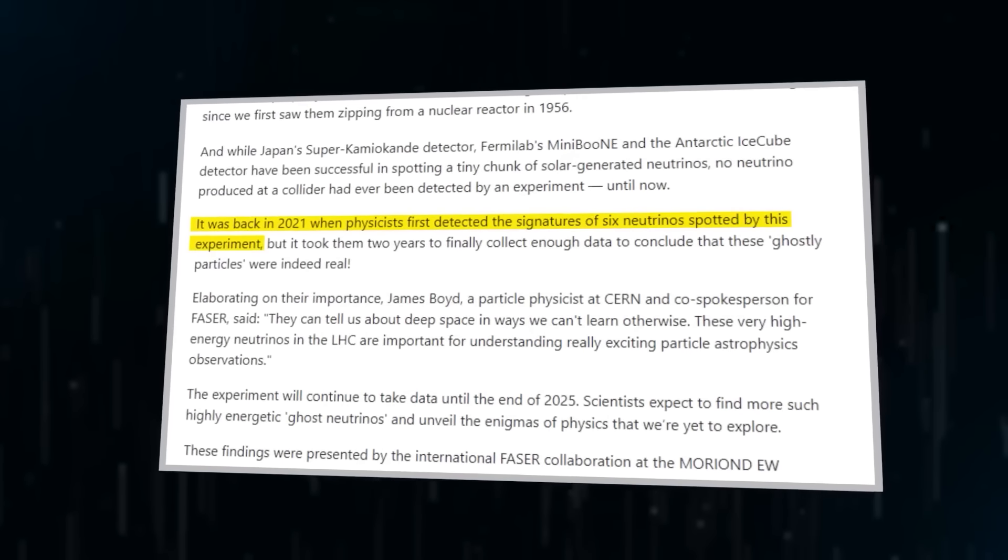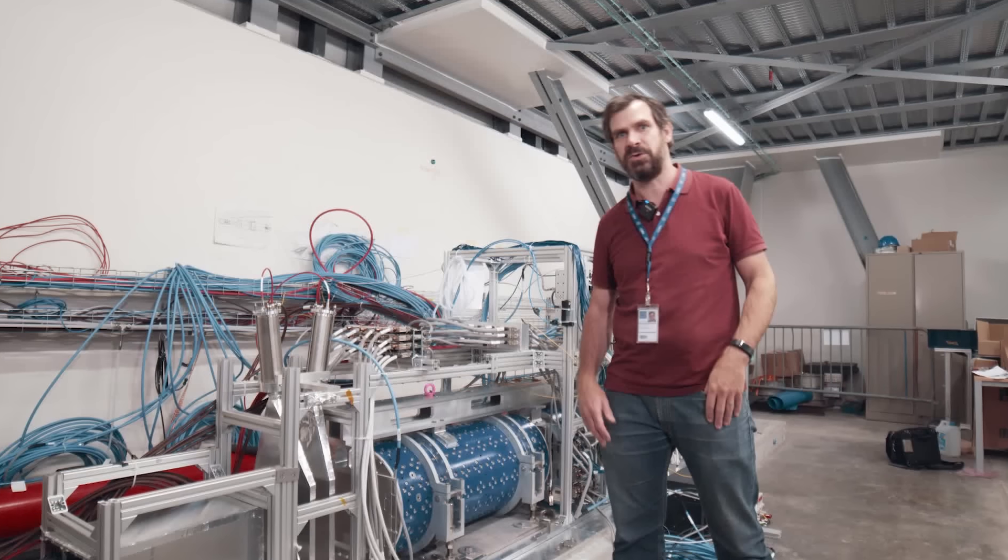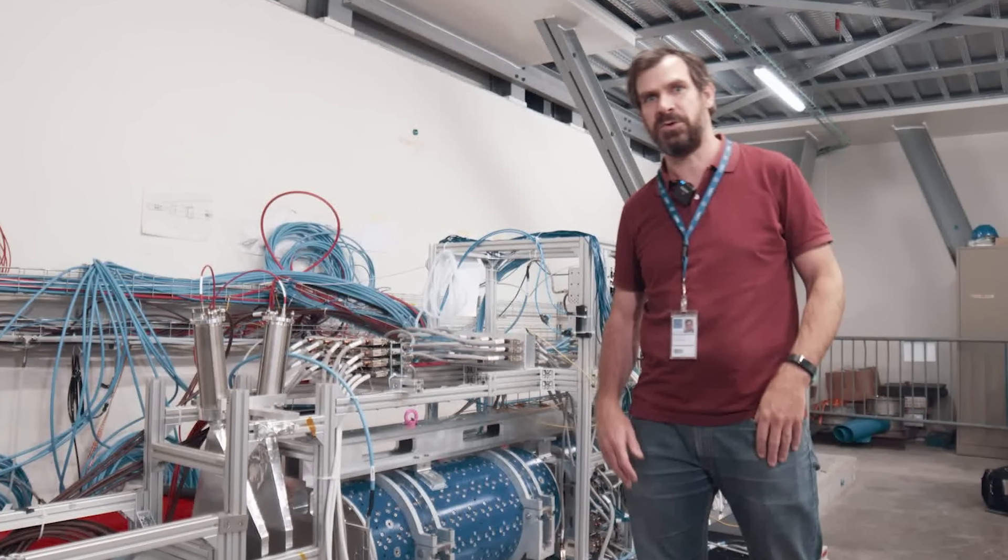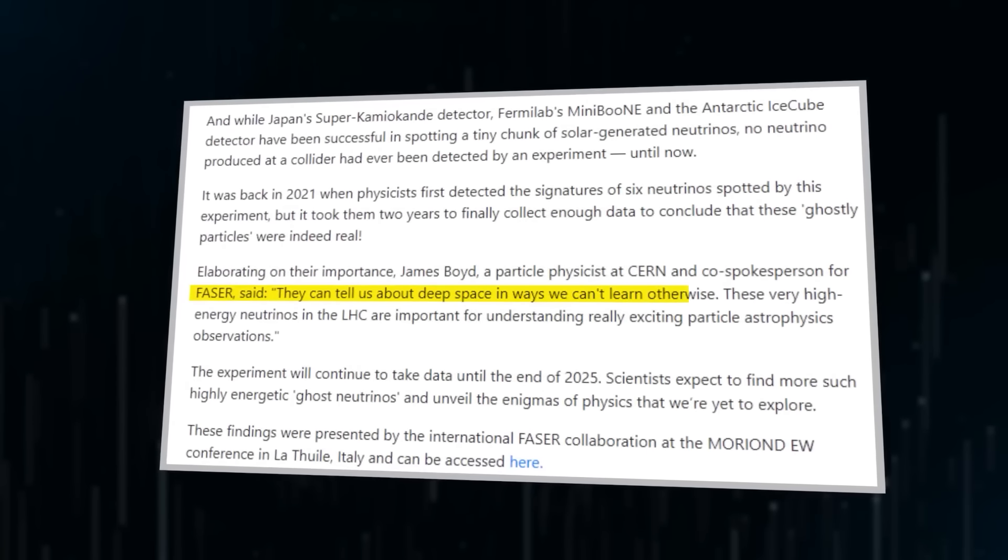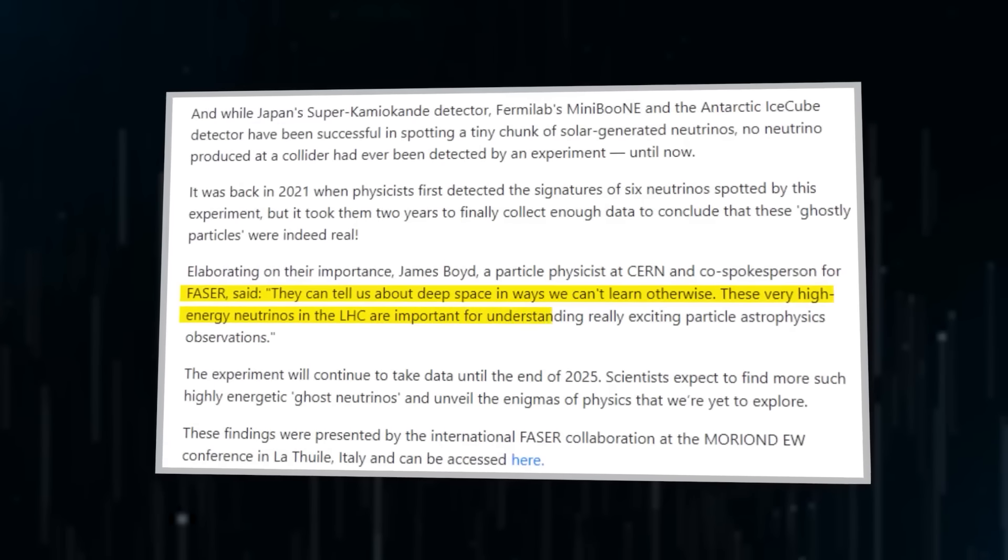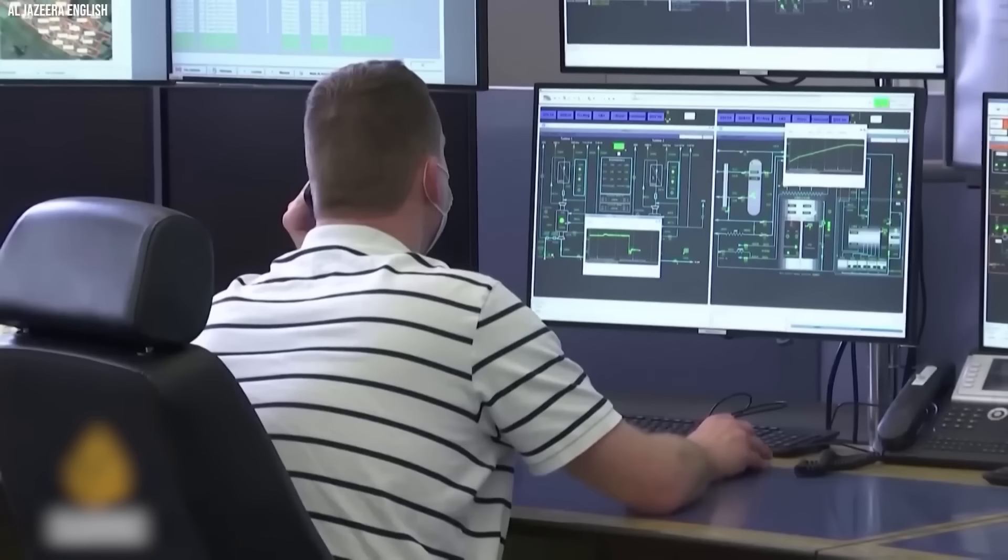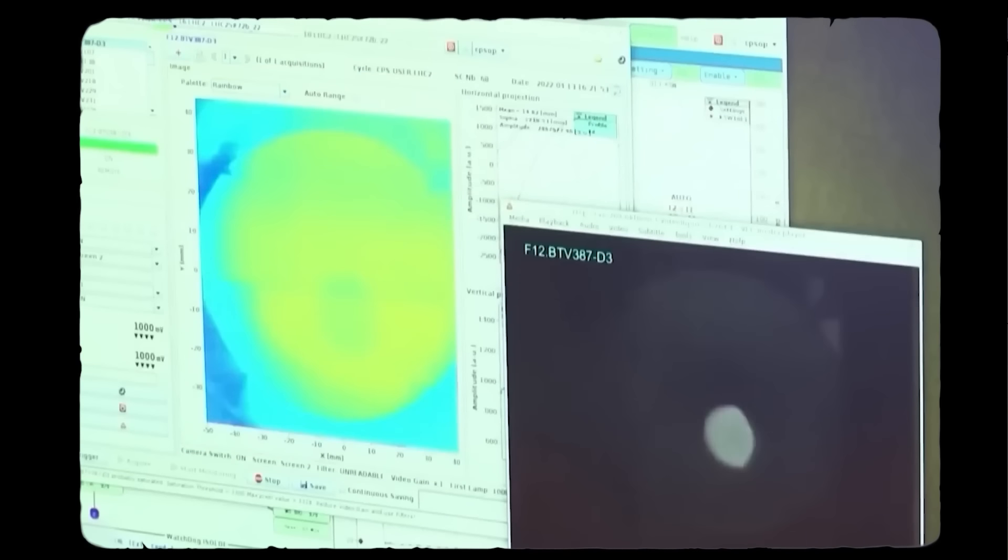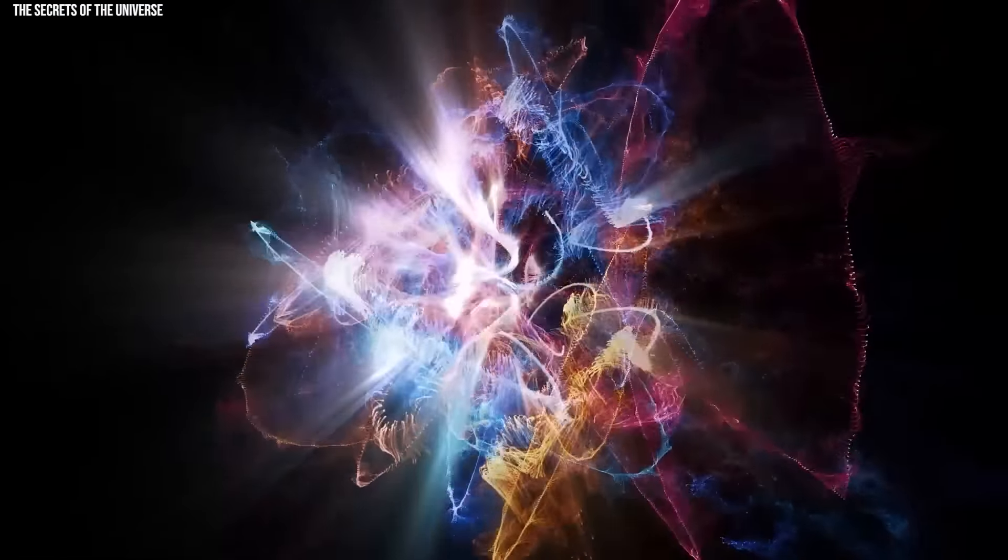Physicists detected the signatures of six neutrinos in 2021, yet it took two years to gather sufficient data to confirm their existence. James Boyd, a particle physicist at CERN and co-spokesperson for Phaser, emphasized the importance of these ghostly particles in understanding deep space phenomena. The high-energy neutrinos in the LHC play a crucial role in advancing our understanding of particle astrophysics. The experiment will continue collecting data until the end of 2025, with scientists anticipating the discovery of more ghost neutrinos to unravel further intricacies of physics yet to be explored.